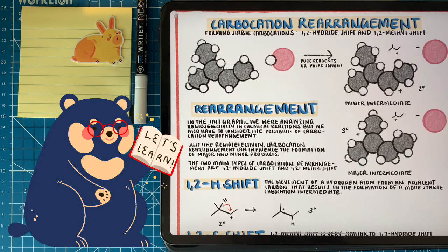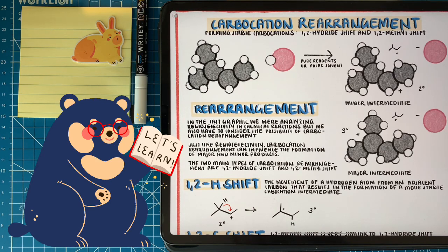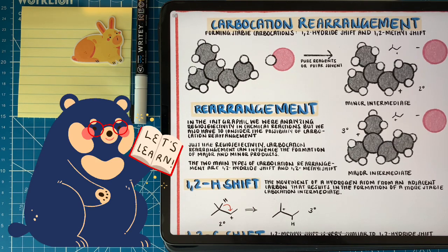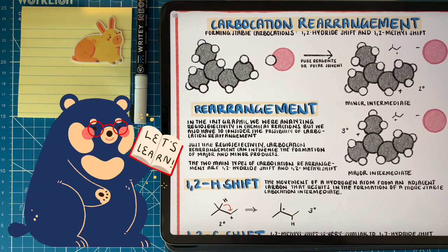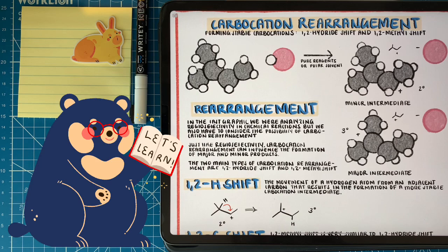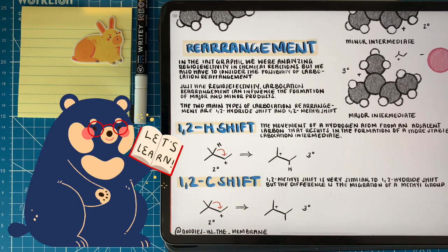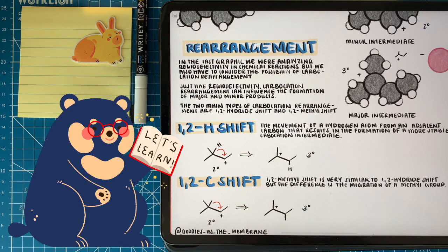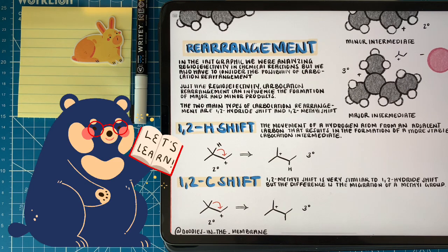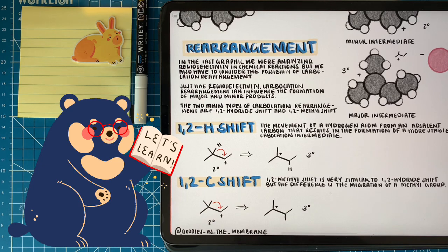When we have the possibility of creating an even more stable carbocation through either moving an adjacent hydrogen or methyl group, we will. We do a hydride or a methyl shift, moving that over to create a more stable carbocation. Let's look at two scenarios. In the first scenario, we have a 1-2 hydride shift, meaning that if we move that hydrogen from the adjacent carbon, we can get a tertiary carbocation when we originally had a secondary.